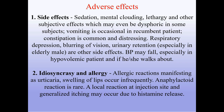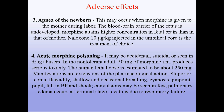Apnea of the newborn may occur when morphine is given to the mother during labor. The blood-brain barrier of the fetus is undeveloped; morphine attains higher concentration in fetal brain than in the mother's. Naloxone 10 micrograms/kg injected in the umbilical cord is the treatment of choice. Acute morphine poisoning may be accidental, suicidal, or seen in drug abusers. In the non-tolerant adult, 50 mg of morphine IM produces serious toxicity; the human lethal dose is estimated at about 250 mg. Manifestations include stupor or coma, placidity, shallow breathing, cyanosis, pinpoint pupils, fall in blood pressure and shock, convulsions, and pulmonary edema at the terminal stage. Death is due to respiratory failure.